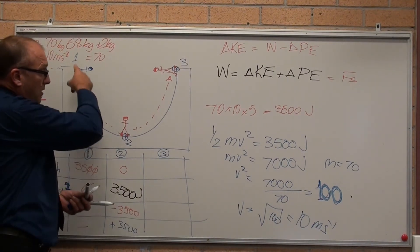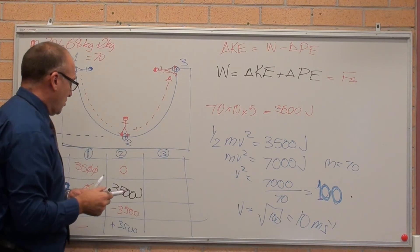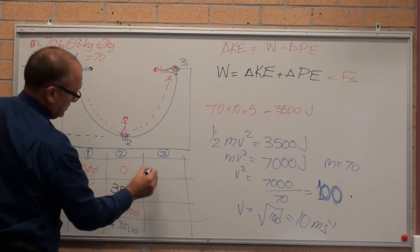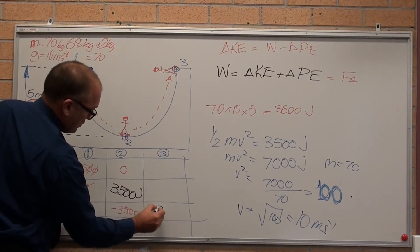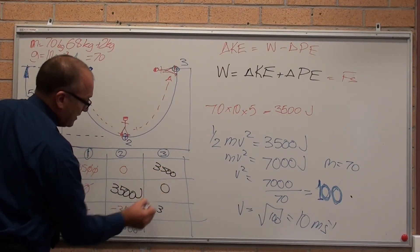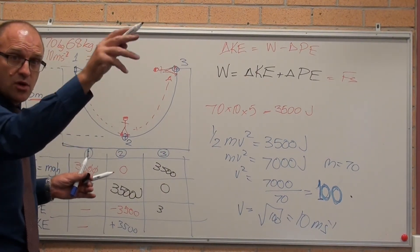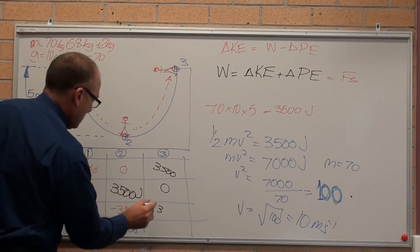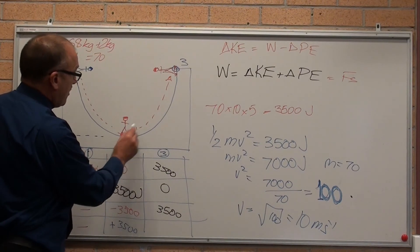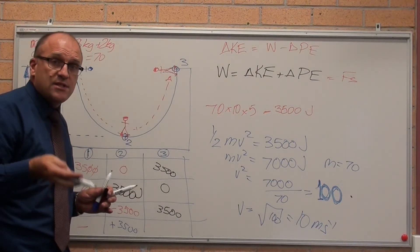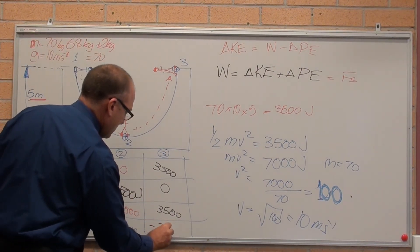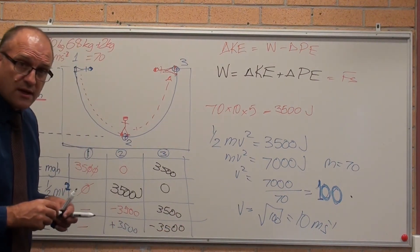Now he just keeps on rolling, because there is no resistance, and he gets all the way up the top again. Potential energy is 3,500 joules, same as before. Kinetic energy is zero, because he stops when he gets up the top, and he runs out of energy to convert. So change in potential energy, from zero meters to five meters up in the air, means he has increased in potential energy by 3,500 joules, which also means he has decreased 3,500 joules worth of kinetic energy.